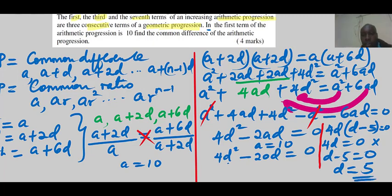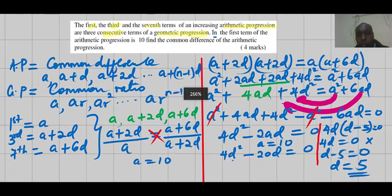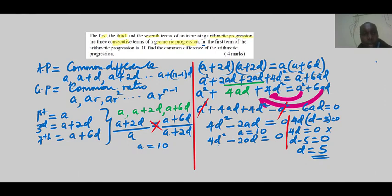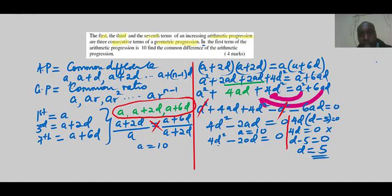So that is our answer — the common difference is 5. To summarize: we identified the first, third, and seventh AP terms, set up the equal-ratio condition for the GP, cross multiplied, substituted a equals 10, and factored to get d equals 5. That is how you work out that question. Thank you so much.